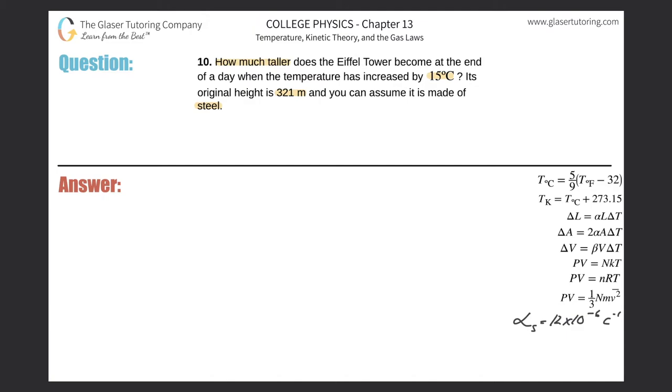Since we're trying to find out how much taller, we're specifically talking about a change in length. So we're going to use the formula over here on the right hand side. It says that the change in length of an object will be equal to its coefficient of thermal expansion multiplied by the initial length of the object, multiplied then by its change in temperature.